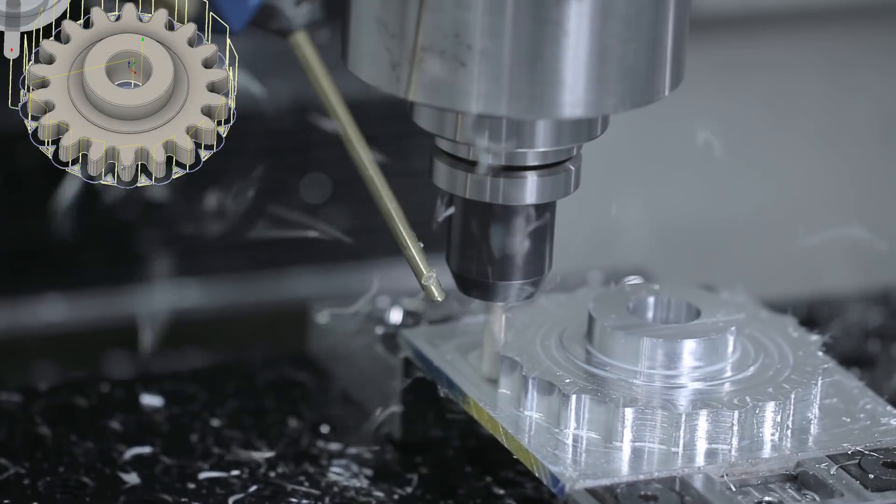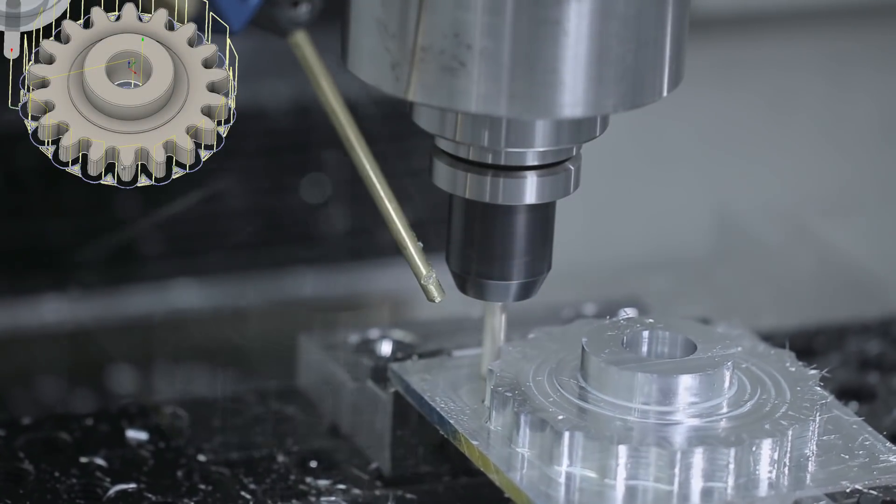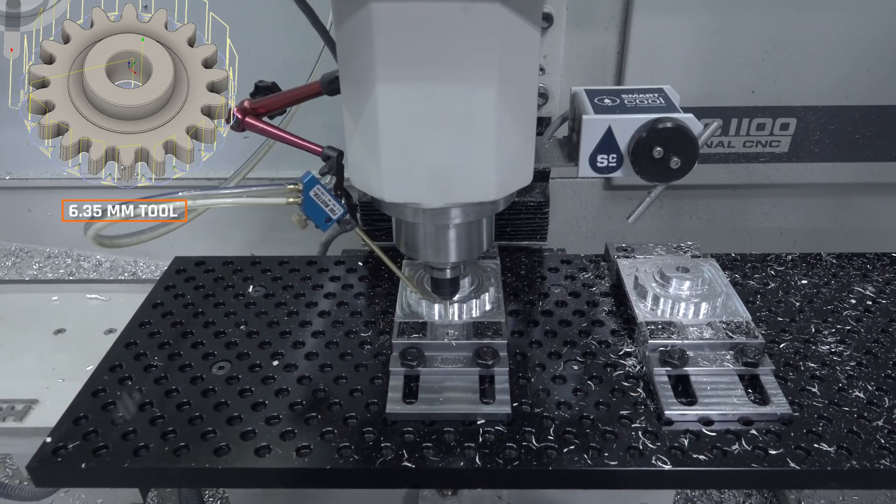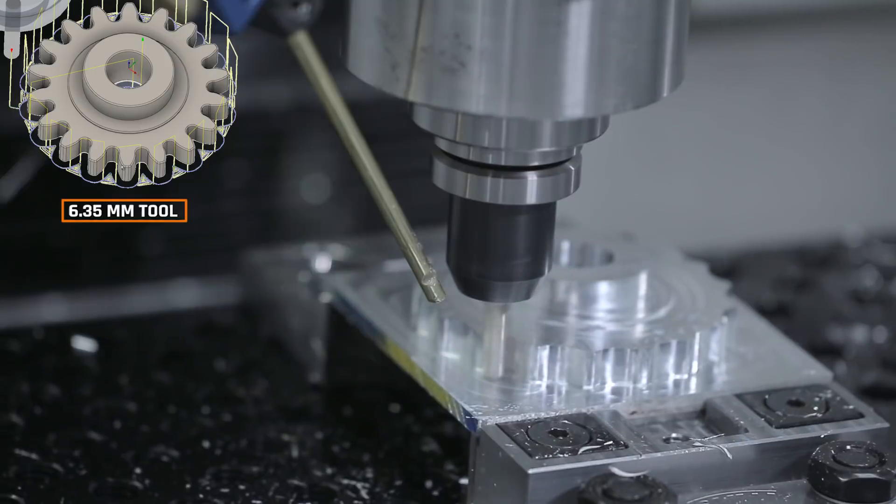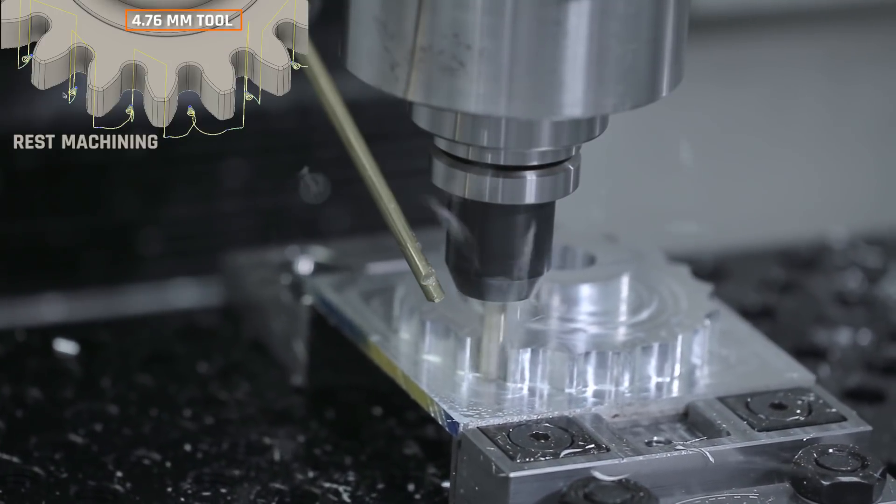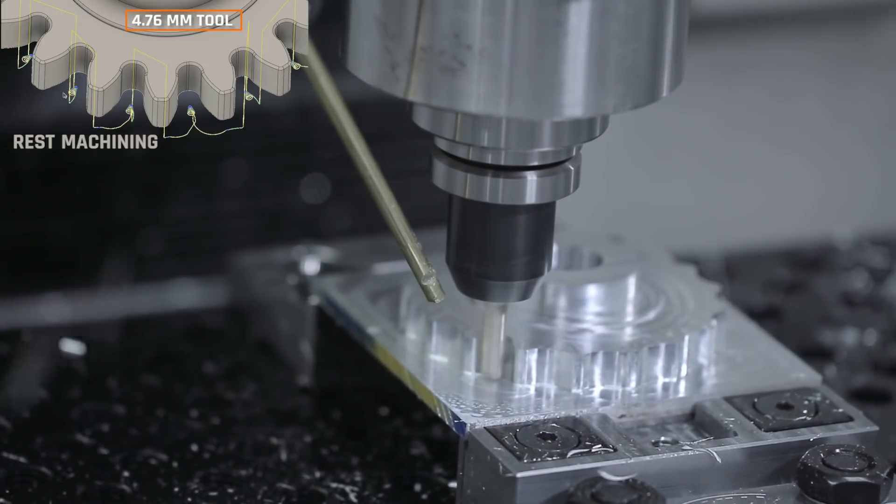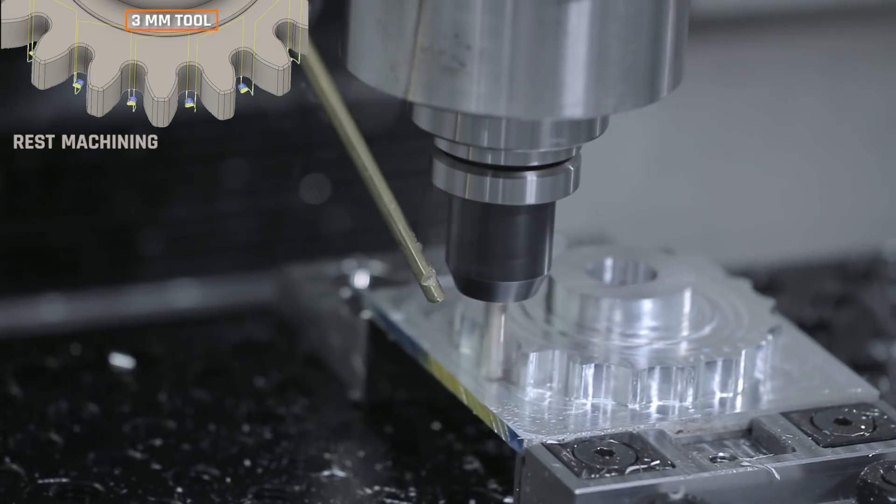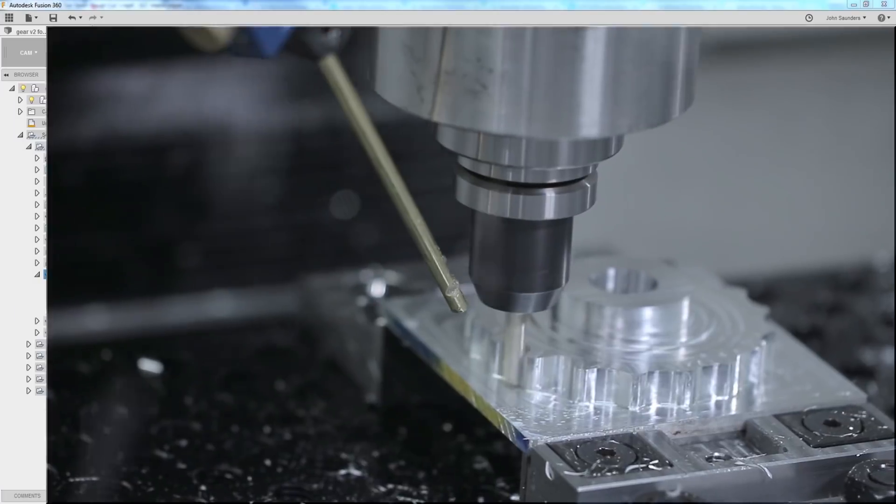Next, we're going to do a series of what I call progressive adaptives. I'm going to use that same quarter inch tool to remove as much of that material left after the shear hog. Then we're going to come in with a 3/16 tool, just do a rest machining, and finally a 1/8 inch tool to rest it out from there before we finally do a 2D contour to get to our final geometry.